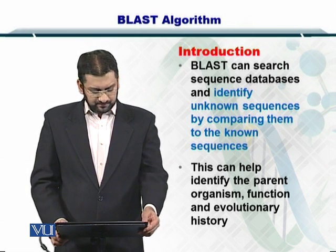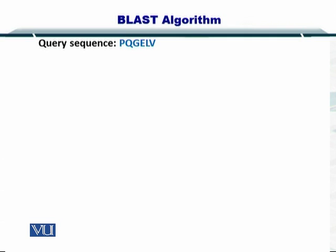To help you understand how BLAST works, let's take a look at this example. Here you have a query sequence — this is the first thing that you need while performing BLAST. On one side you have the query sequence, while on the other side you have a database. As you can see here, your query sequence is an amino acid sequence — in this case, a very small peptide.